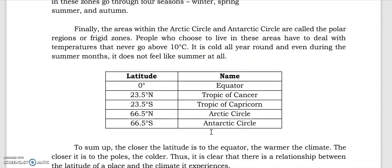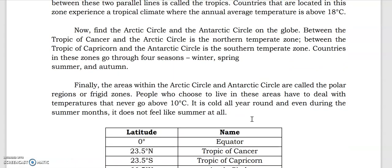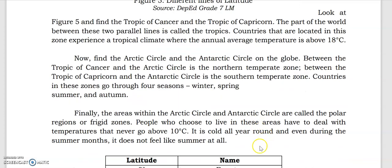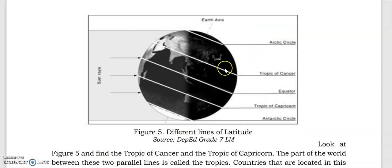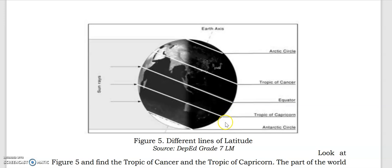The closer the latitude is to the equator, the warmer the climate, and you will experience summer in that area. The closer the place is to the Arctic and Antarctic Circle, the colder it will be, and countries there will experience the four seasons — those in between the Tropic of Capricorn and the Antarctic Circle, and similarly near the Arctic Circle.